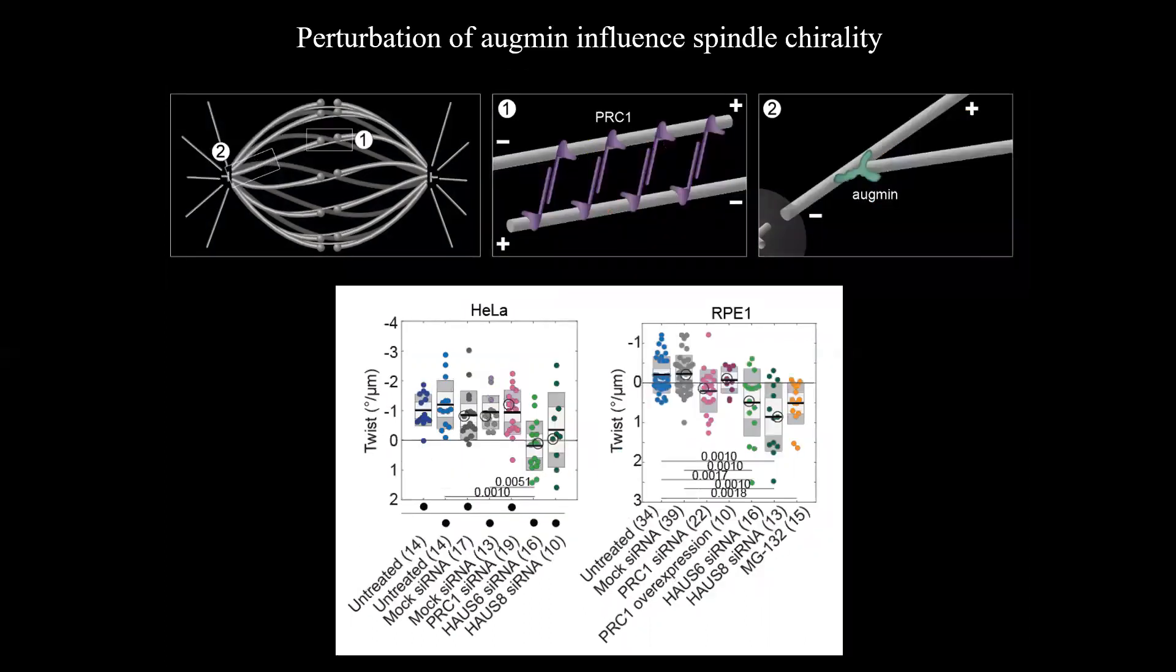Then we tested also two other groups of proteins. First, proteins that cross-link neighboring microtubules or link microtubules with the pole may prevent free rotation of the microtubules and thereby allowing for twisting of bundles. Example of such protein is PRC1. And lastly, nucleation of new microtubules within the bundle for which the augmin complex is responsible may also somehow affect the bundle twist.